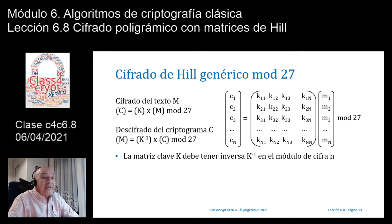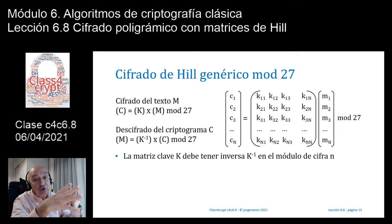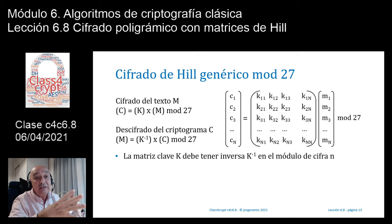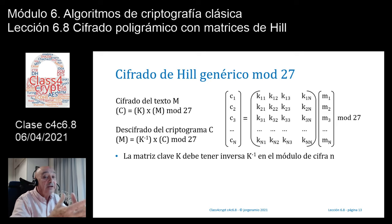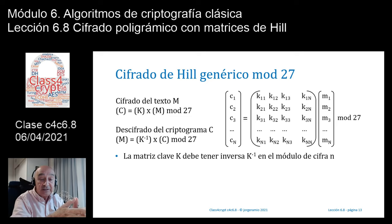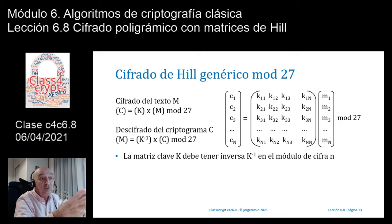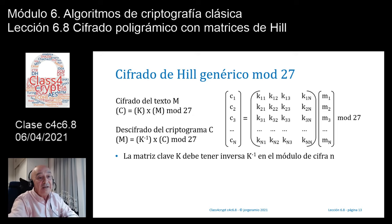Lo importante es que esta matriz clave K debe tener inversa — igual que sucedía con la cifra afín o por decimación donde no se podía dividir sino multiplicar por el inverso multiplicativo. Por ejemplo, si cifraba multiplicando por 4 en módulo 27, para descifrar tenía que multiplicar por el inverso de 4 en módulo 27, que es 7, ya que 7×4=28 y 28 módulo 27 = 1. Aquí exactamente lo mismo: en vez de multiplicar y dividir por números, multiplico y divido por matrices usando la matriz inversa.